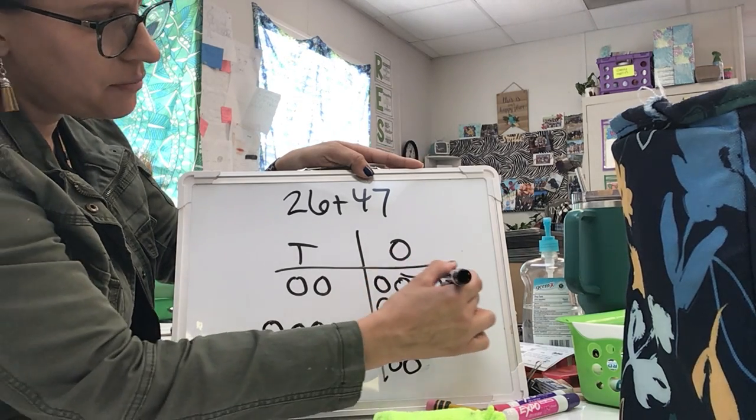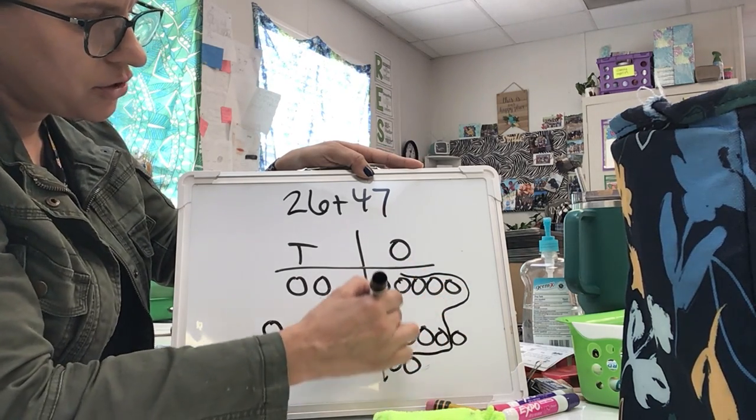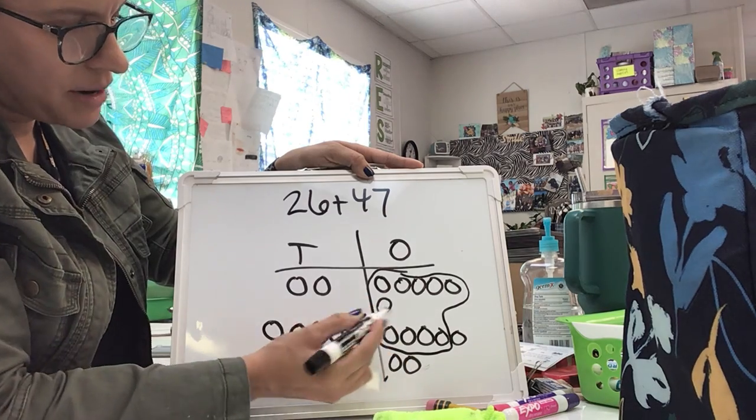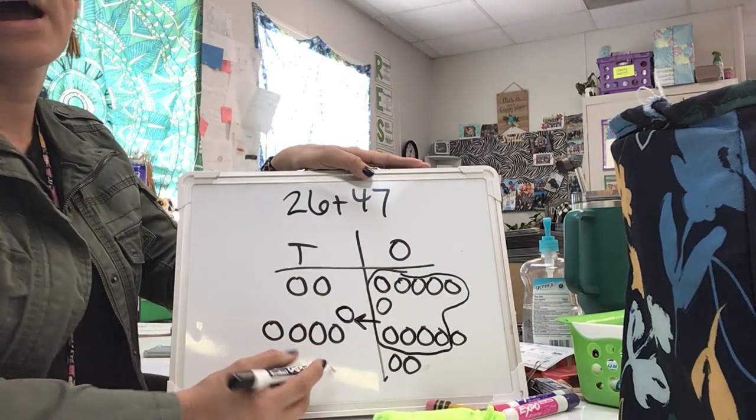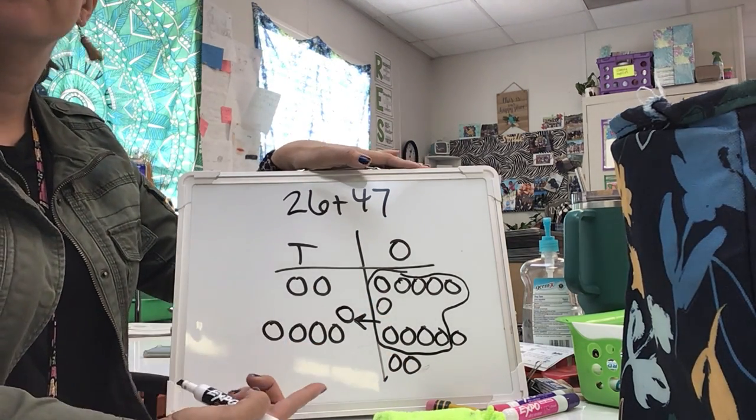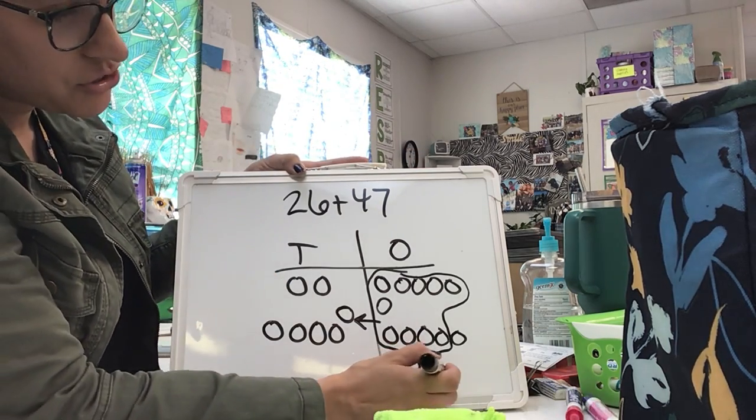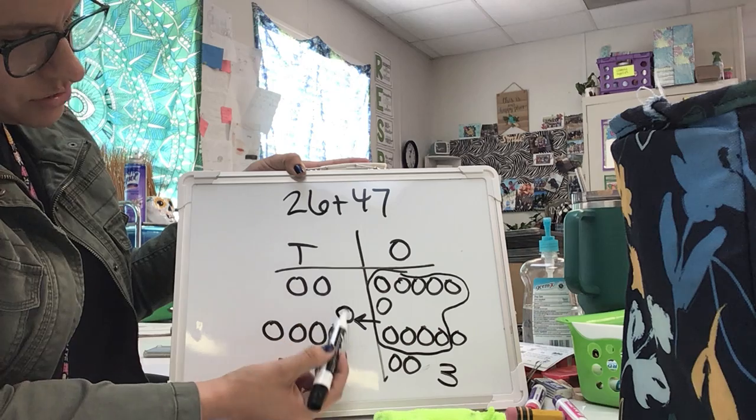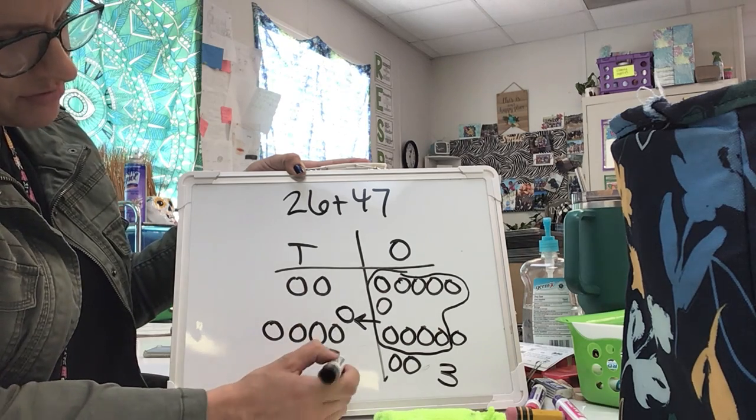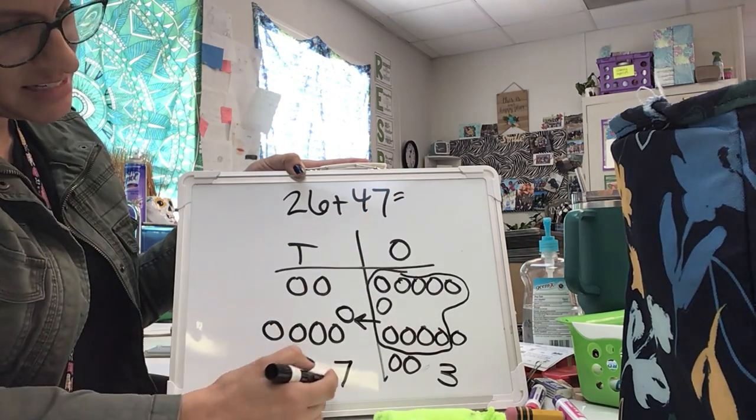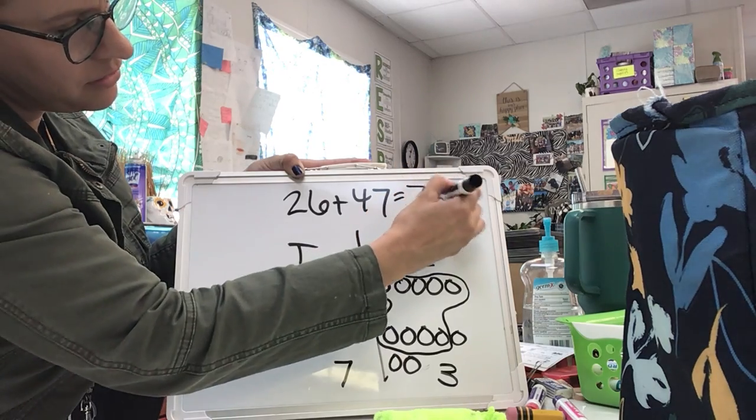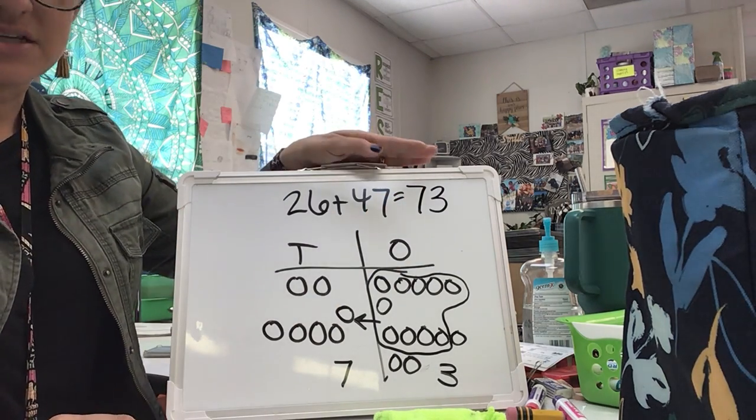13 is more than 10, so I'm going to bundle around a group of 10, draw my arrow, and draw one more. I regrouped, and I have enough to make another 10. There's 3 left over here. 1, 2, 3, 4, 5, 6, 7 over here in the tens. I have 7 in my tens and 3 in my ones. The number is 73 for the sum.